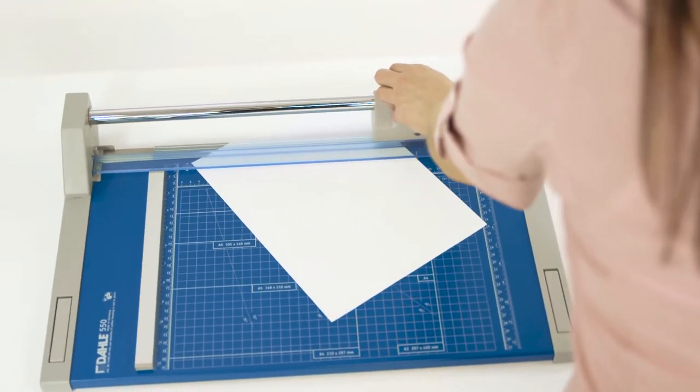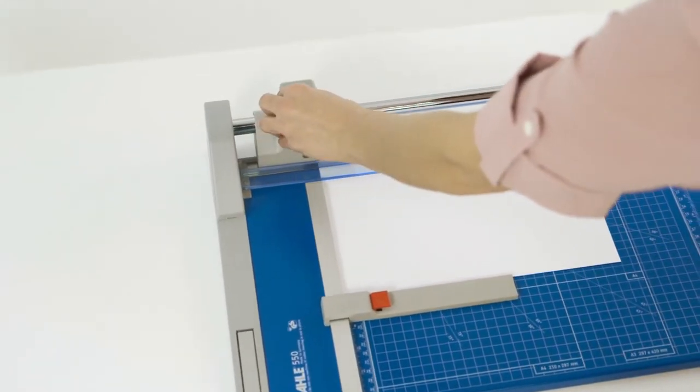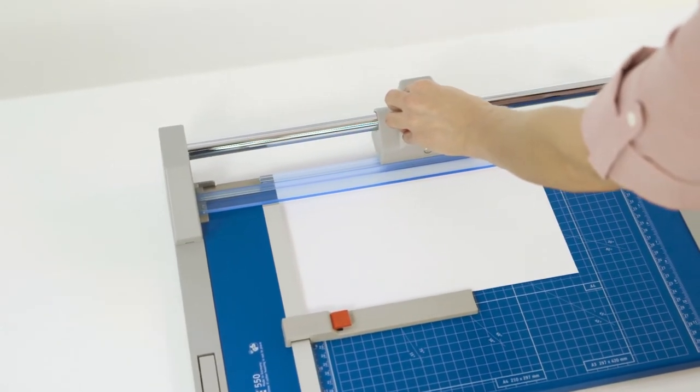This German-engineered trimmer cuts up to 20 sheets at a time and features a self-sharpening blade that cuts in both directions.